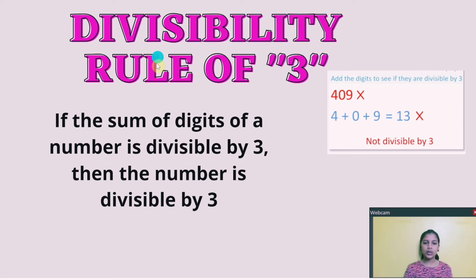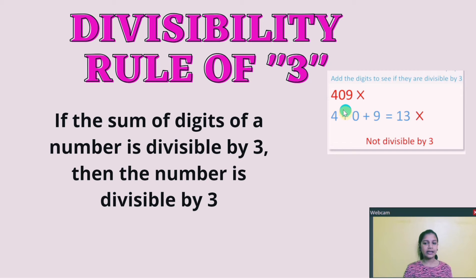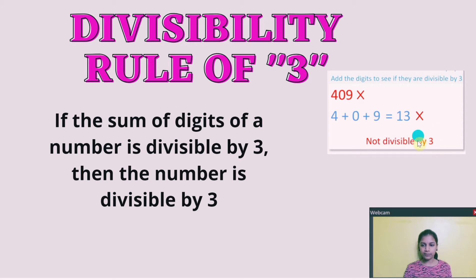Now, divisibility rule of 3. If the sum of digits of a number is divisible by 3, then the number is divisible by 3. Example: if you take the number 409, it is not divisible by 3. Because if you add 4 plus 0 plus 9, you get 13. And 13 is not in the table of 3. So 409 is not divisible by 3.